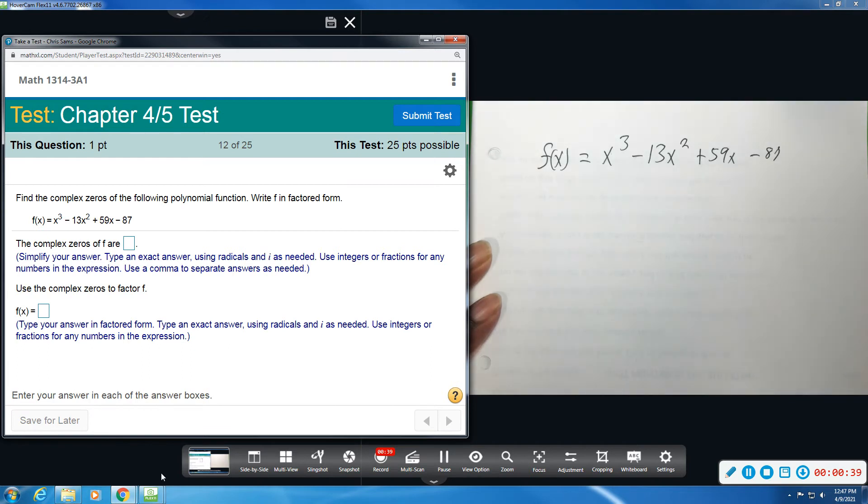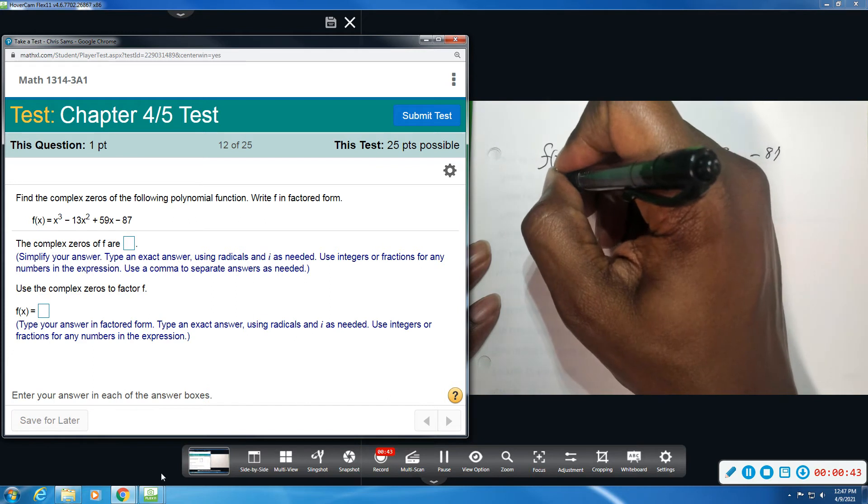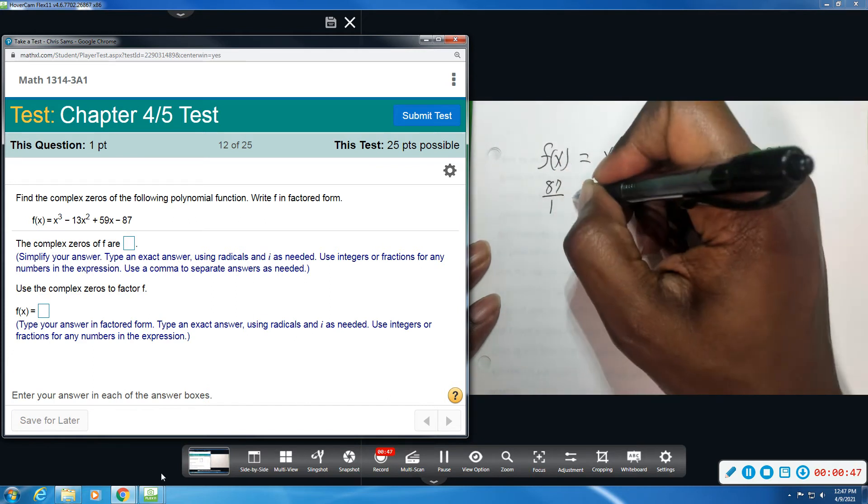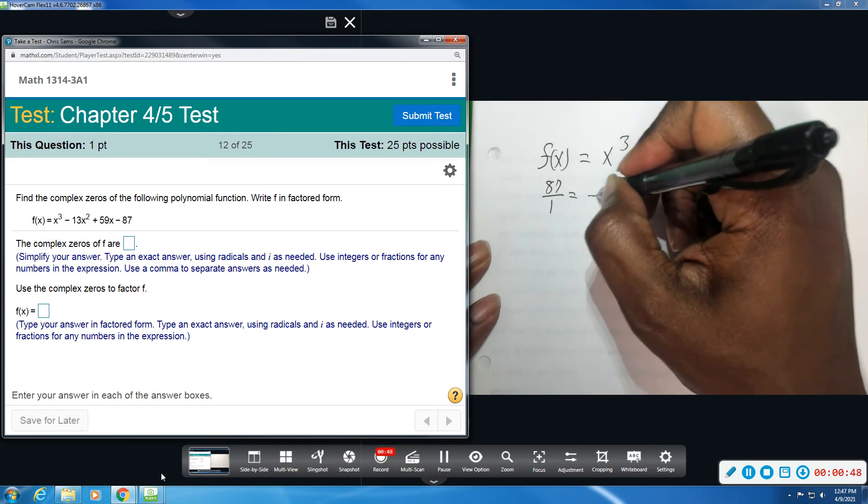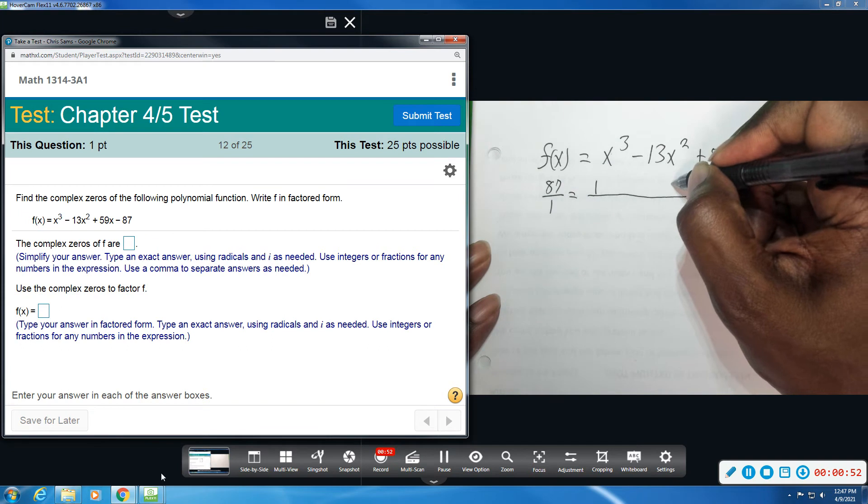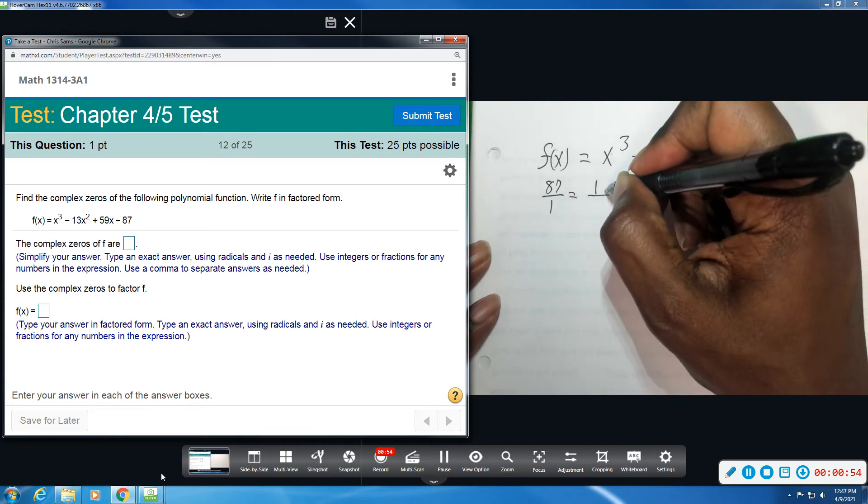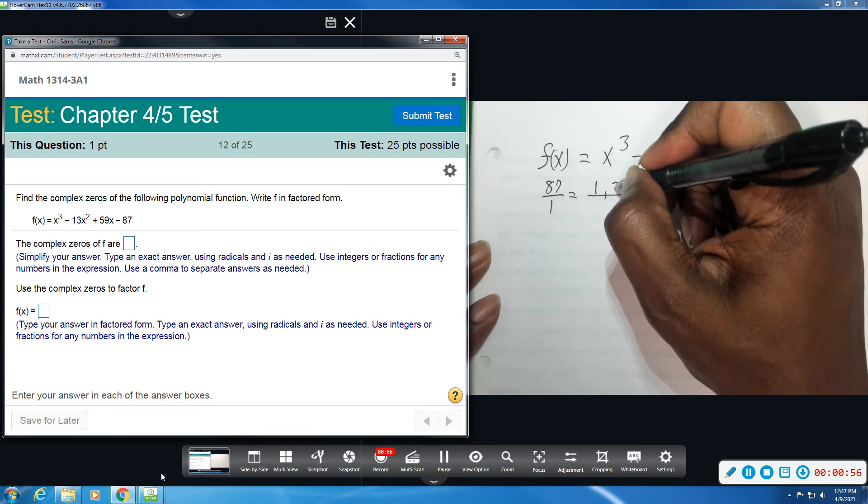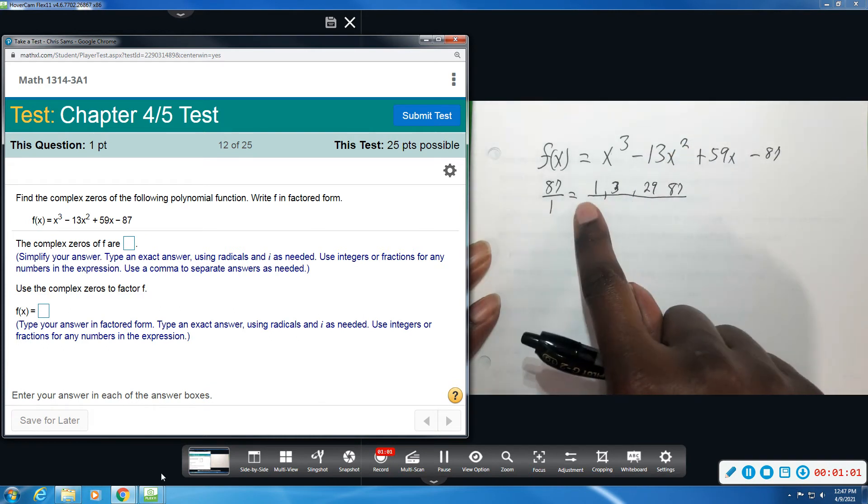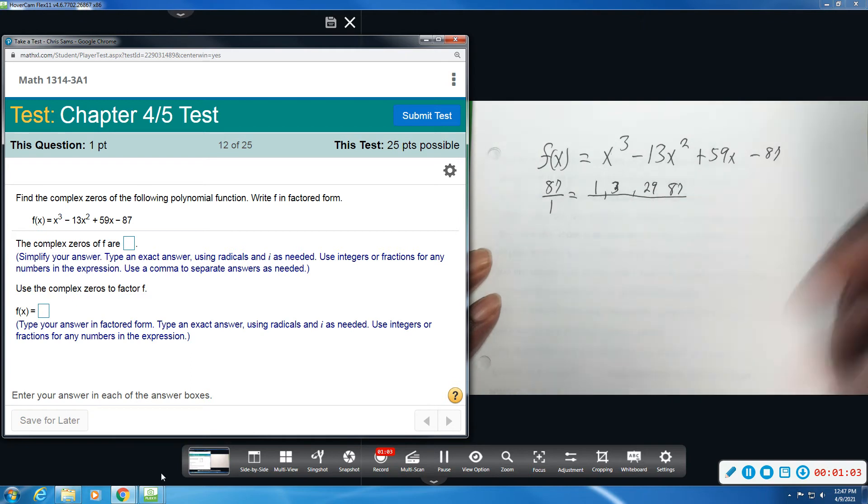So first, I'm going to find the possible rational zeros, so I'm going to take 87 divided by 1. So that's the p over q. The factors of 87, the things that multiply to give us 87 are 1 and 87, and 3 and 29, and I think that's all we will get. So 1, 3, 29, and 87.